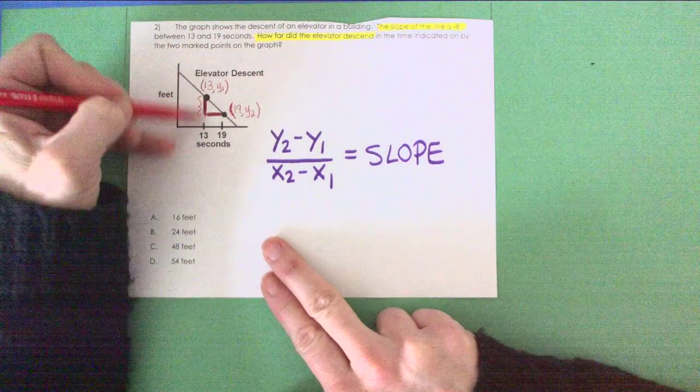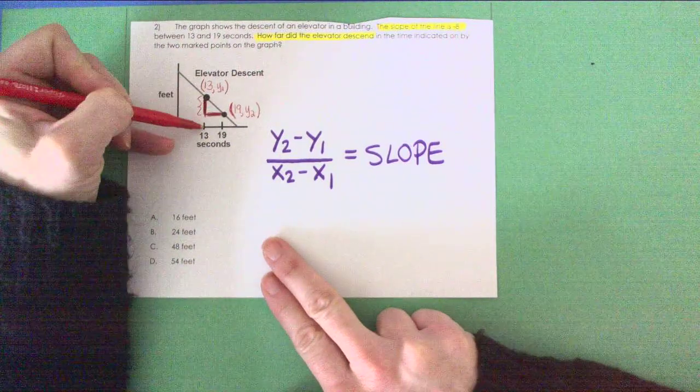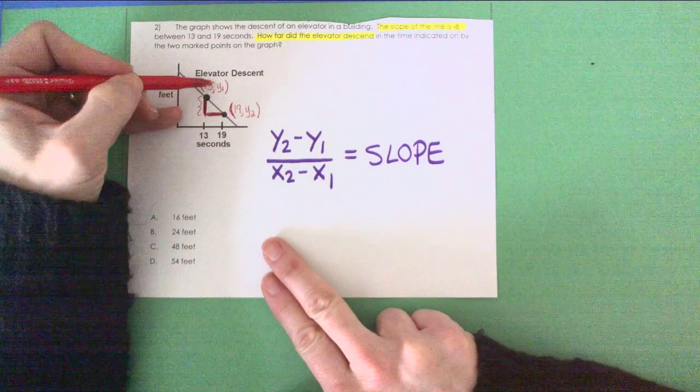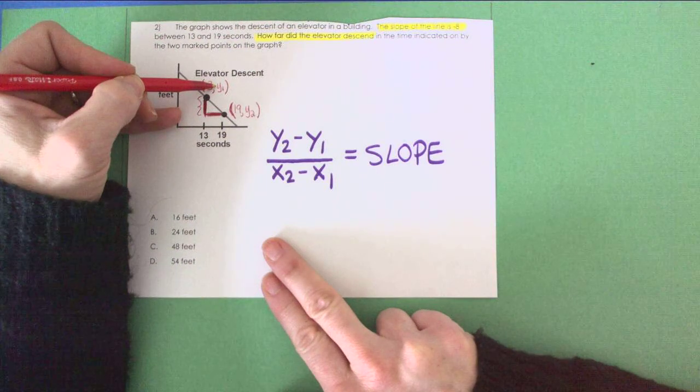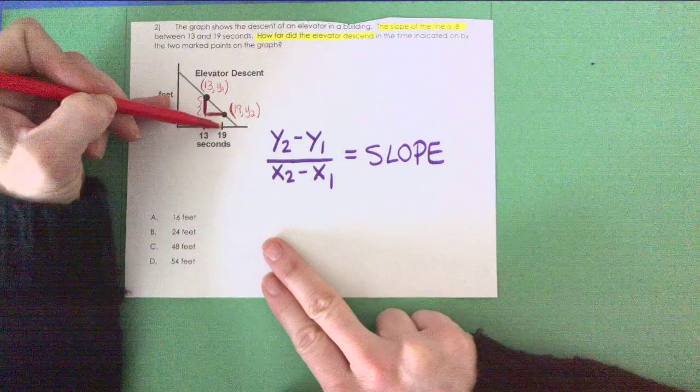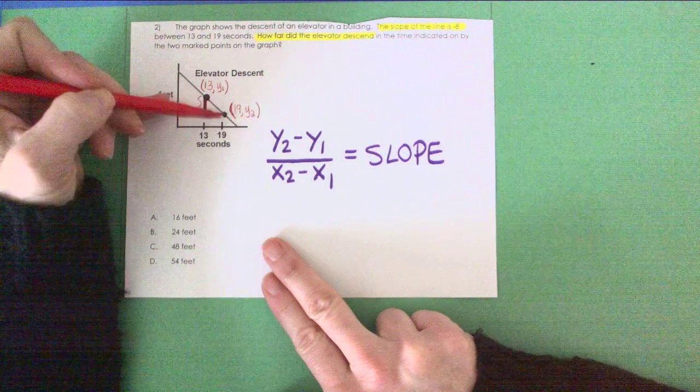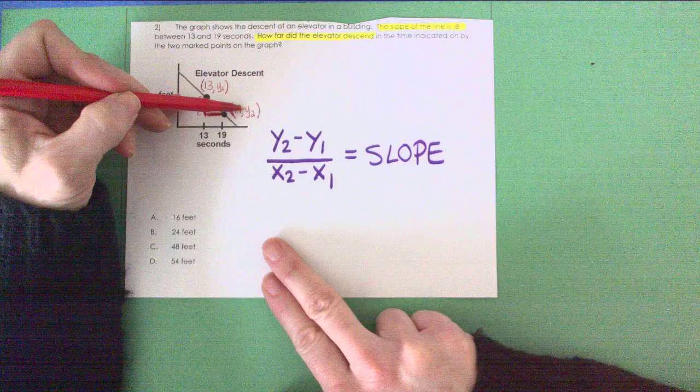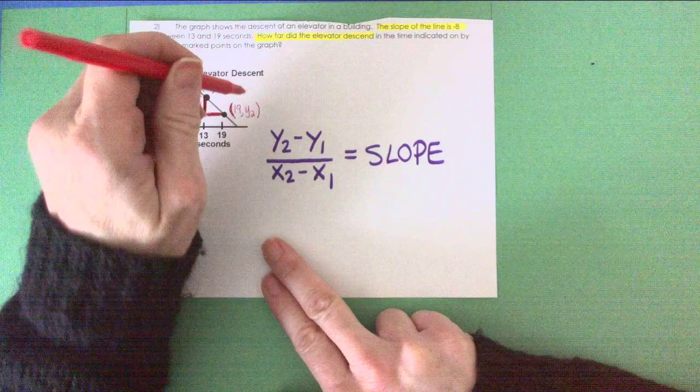Think about it. This dot has an X value of 13, but we don't know the Y value, so I called it Y sub 1. For this giant dot, we know the X value is 19, but we don't know the Y value, so I called that Y sub 2, all the while thinking about this formula.